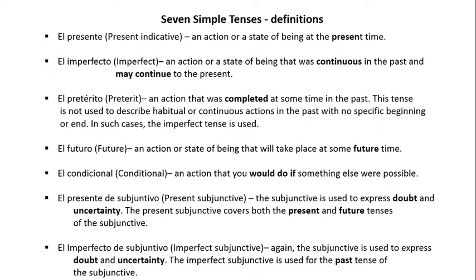El condicional, or the conditional tense, is an action that you would do if something else were possible. The present subjunctive is used to express doubt and uncertainty, and it covers both the present and future tenses of the subjunctive. The imperfect subjunctive is also used to express doubt and uncertainty, and is used for the past tense of the subjunctive.